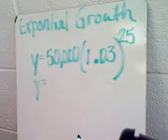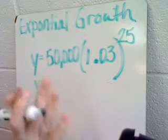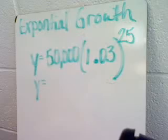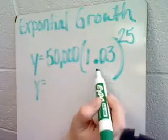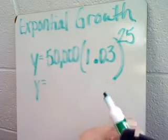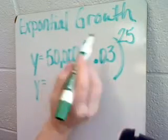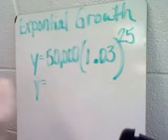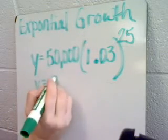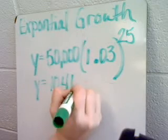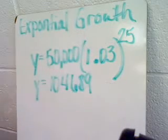When you do the math following the order of operations — first 1.03 to the 25th power and then multiply that by 50,000 — you would get a population of 104,689 people.